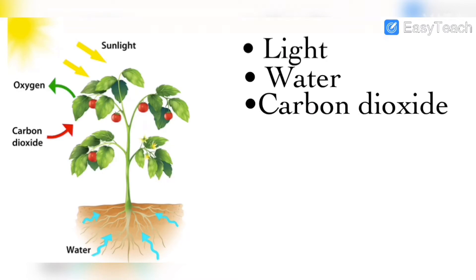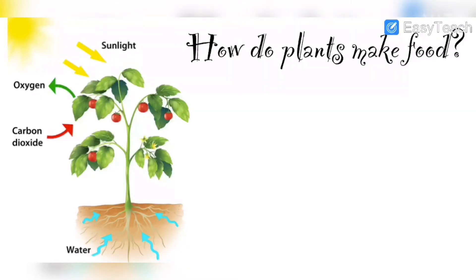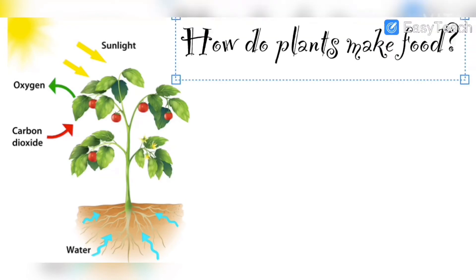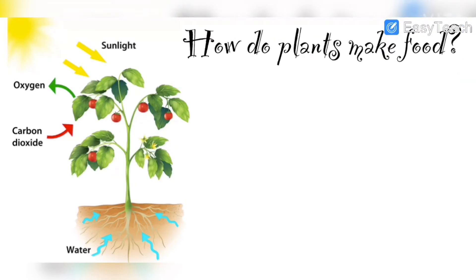Now the question arises: how do the plants make food? Green plants make their own food with the help of chlorophyll present in their leaves. They use materials such as light, water, and carbon dioxide present in the air as raw materials to make their food, as we covered earlier with the required materials.